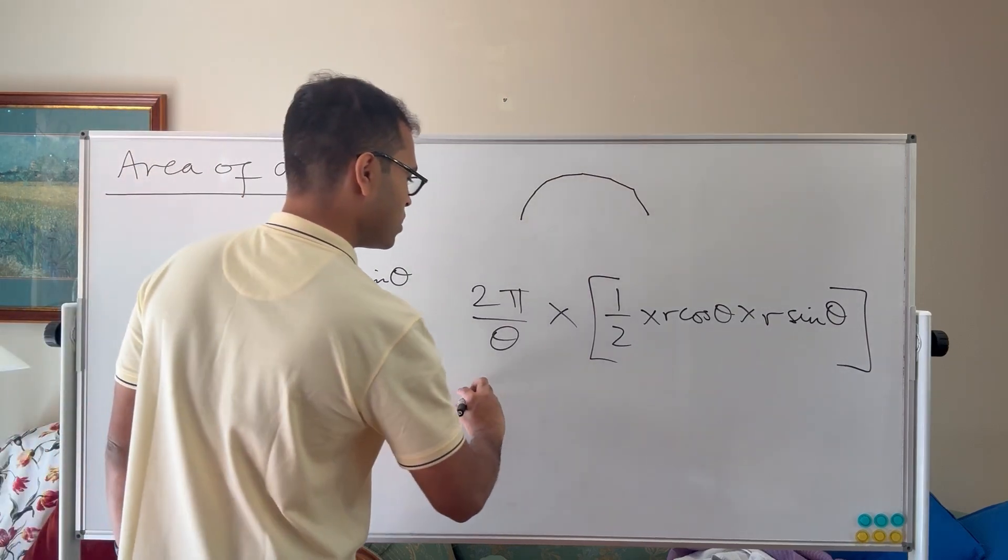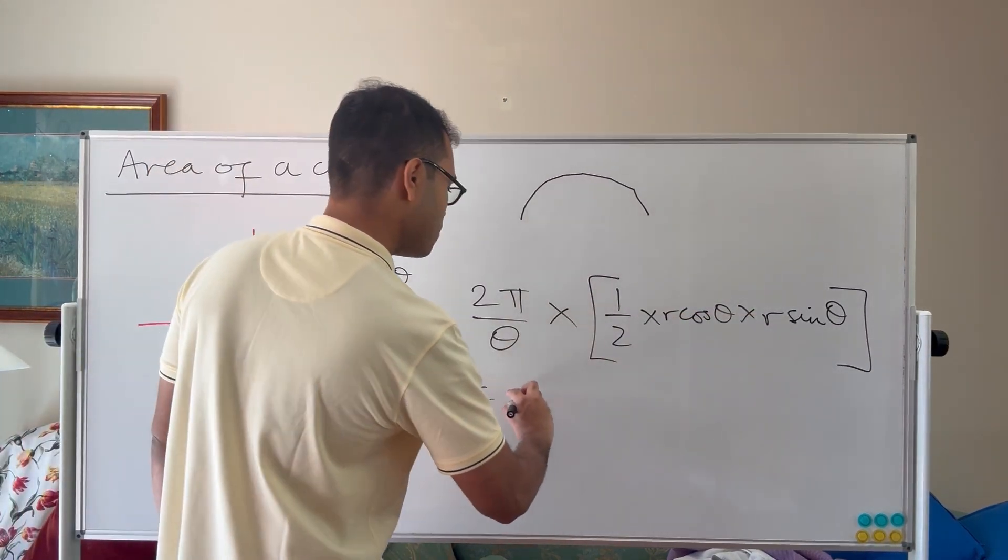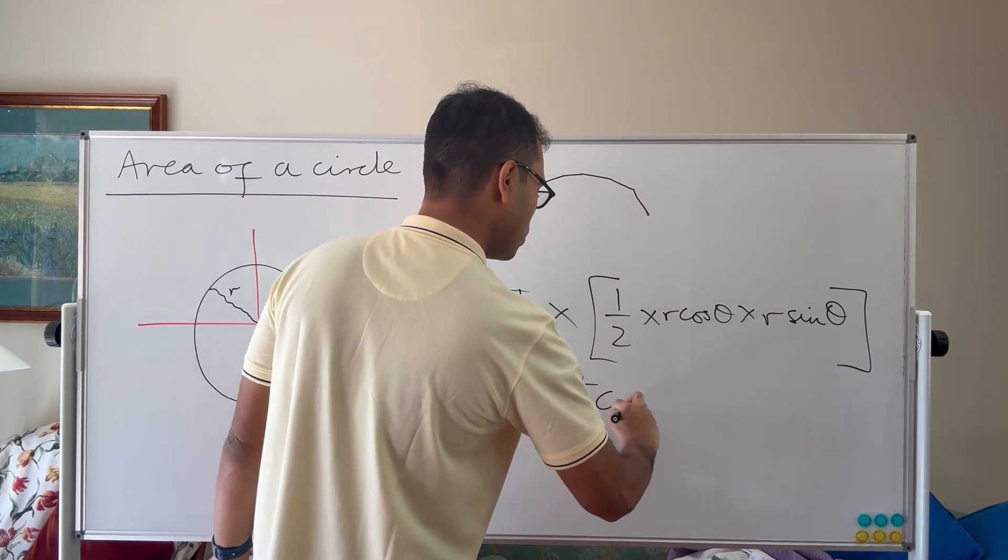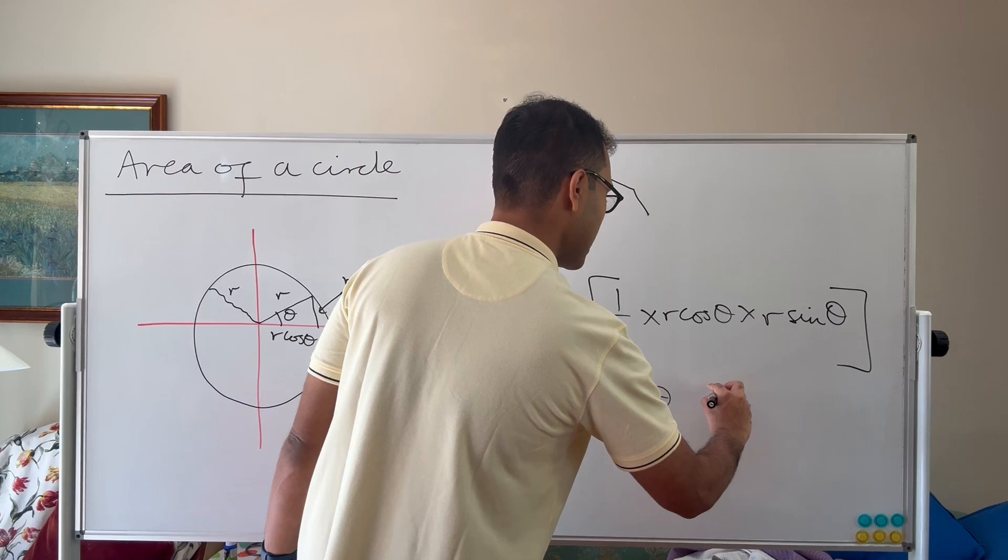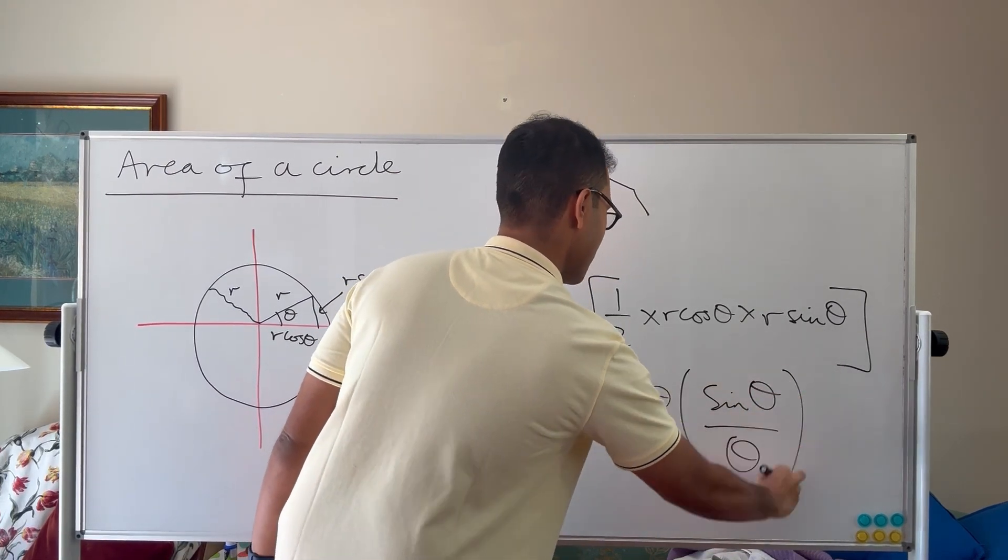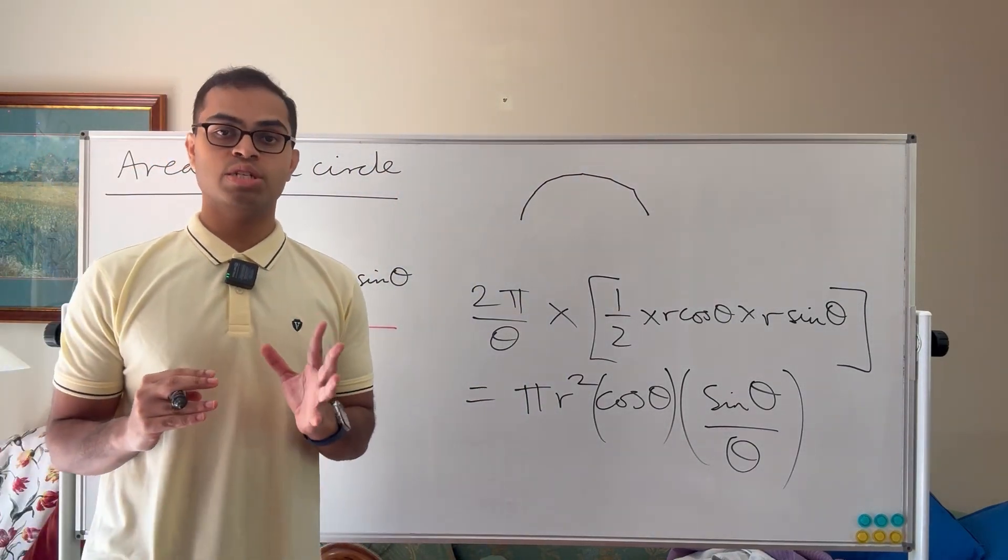So what we're going to do is simplify this. So first of all, we can multiply the two r's there and we're going to get π r squared, the two's cancel, π r squared cos θ times sin θ over θ. So I'm writing this in a specific way. I'm collecting the terms and we want to understand what does this approach as θ approaches zero.